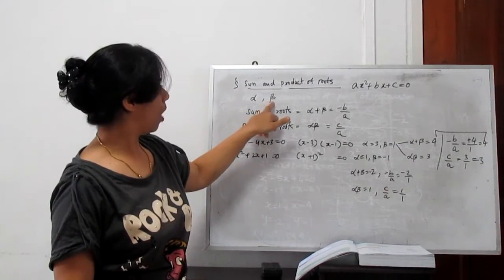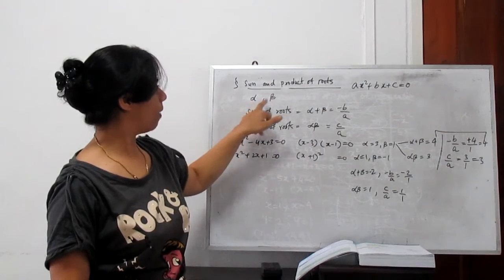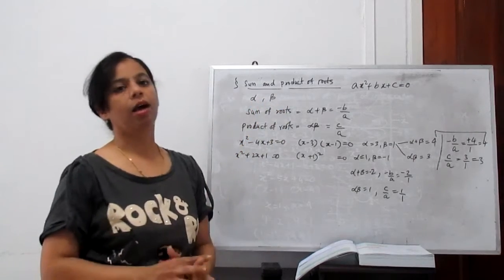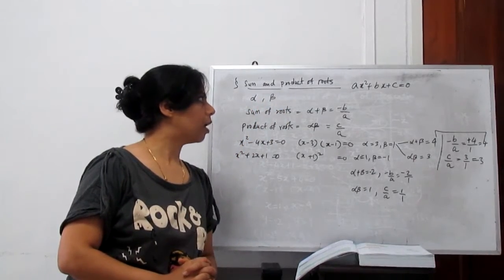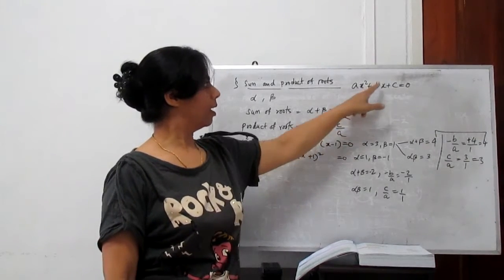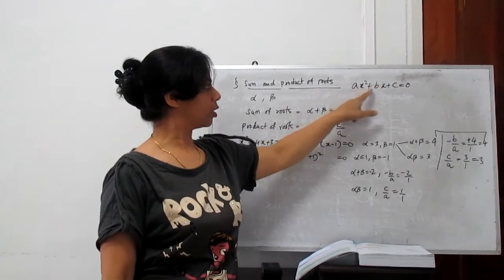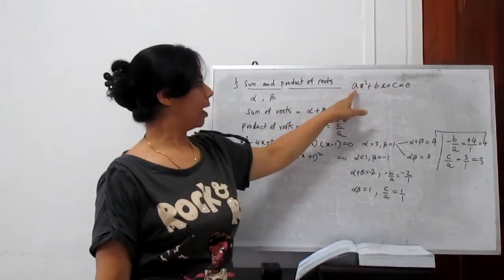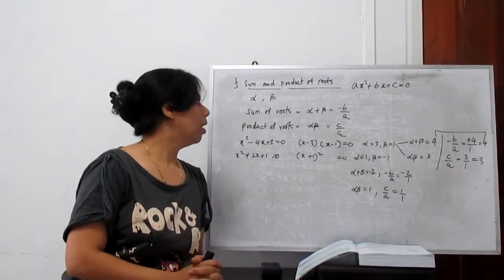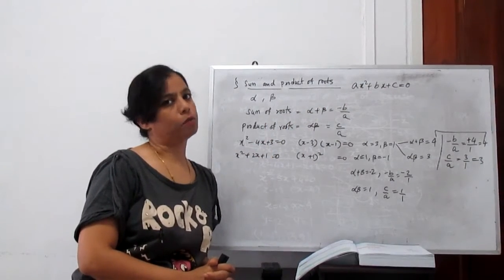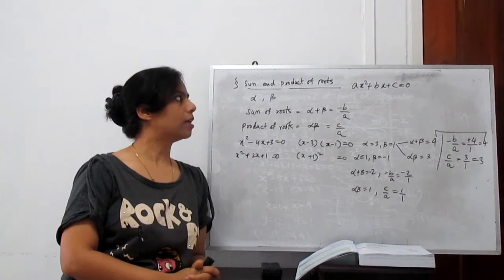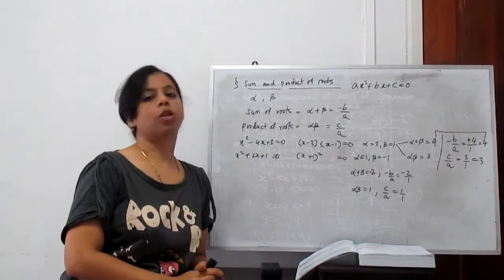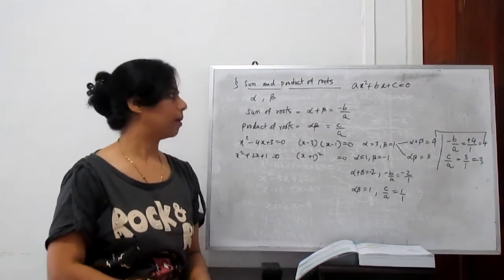We can say that our roots are alpha and beta. The sum of roots, alpha plus beta, we can directly find from -b/a. And the product of roots is c/a. This is the formula for sum of roots and product of roots. You can directly find what alpha plus beta is — it's -b/a — and what alpha·beta is — it's c/a.